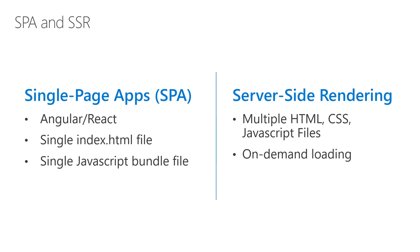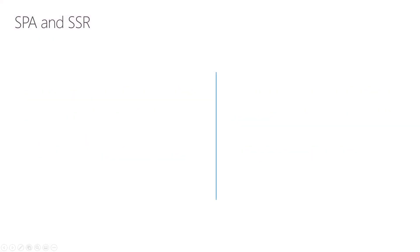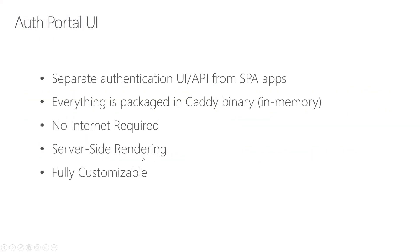With a SPA, you load the entire website once, and whenever you browse different pages of the app, you're not actually querying the web server because everything has already arrived. But with server-side rendering, every time you make a request, the server returns you back the page. The authentication portal is a server-side rendered application.